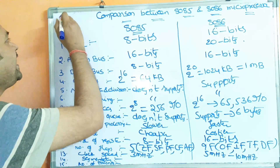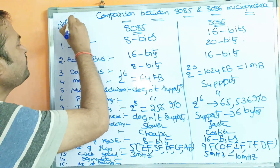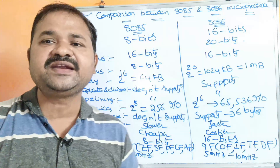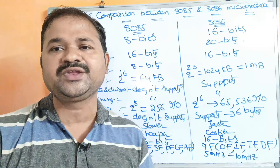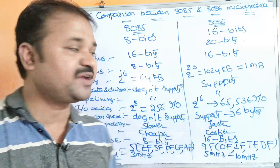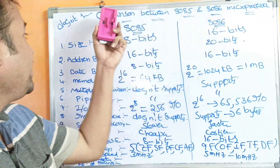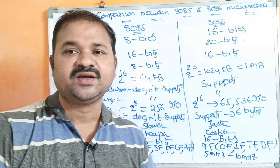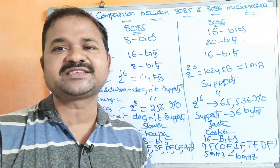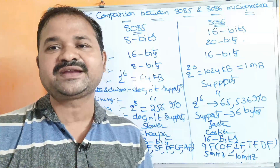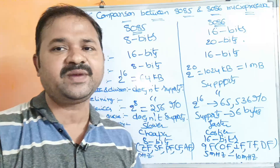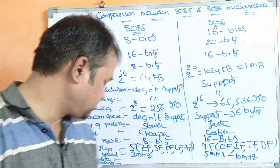The next characteristic is segmentation. The 8085 does not support segmentation. Segmentation means dividing main memory into various parts, which is not possible in 8085. Whereas the 8086 supports segmentation — we can divide main memory into various segments such as the Stack segment and Data segment, based on our requirements.